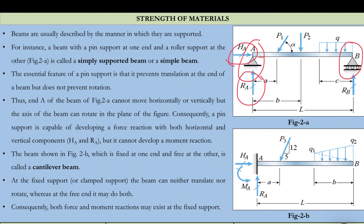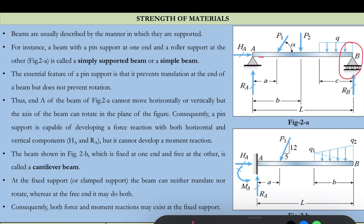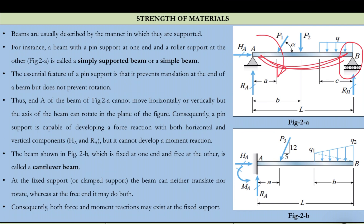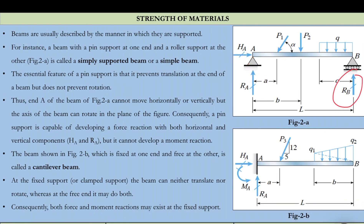The essential feature of a pin support is that it prevents translation at the end of a beam but does not prevent rotation. Two reactions at a pin support prevent horizontal and vertical movement, but there is no reactive moment, so the beam can rotate. A roller support only prevents deformation perpendicular to the roller — it prevents movement in only one direction.